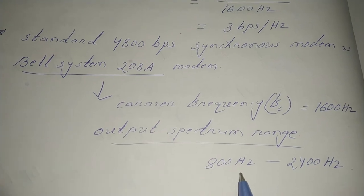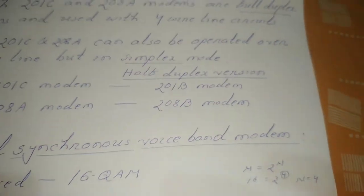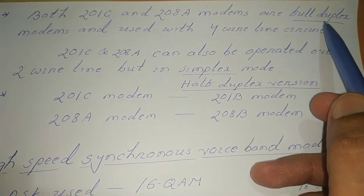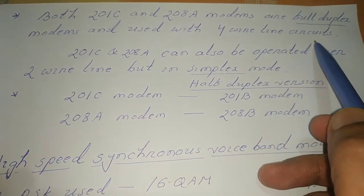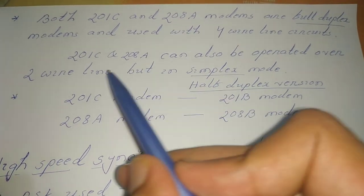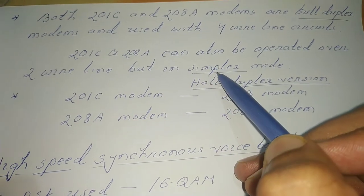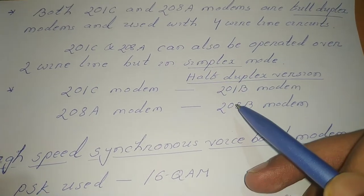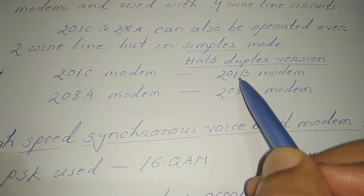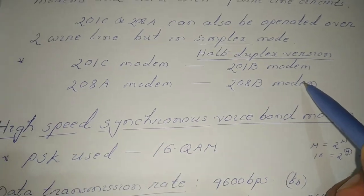Common features of both the Bell System 201C and 208A modems: both work in full duplex mode and use a four-wire telephone line. It is also possible to work in simplex mode using a two-wire telephone line. A half duplex version also exists: the 201C half duplex version is called 201B, and the 208A half duplex version is called 208B.